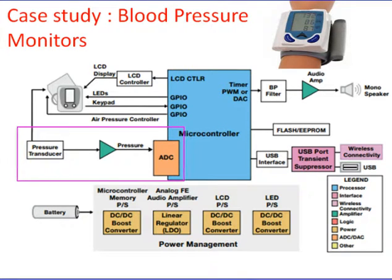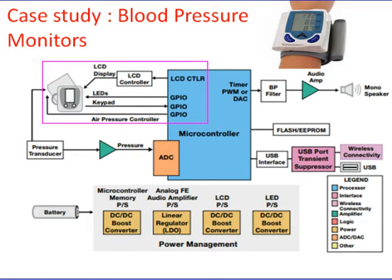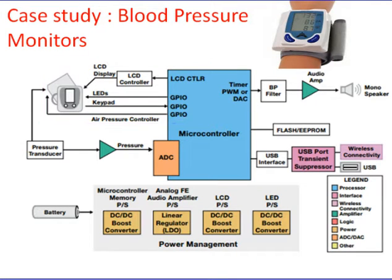The three measurement phases are inflation, measurement, and deflation. Also included in the blood pressure monitor are an LCD display, selection buttons, memory recall, power management, and a USB interface. The digital measurements of pressure and heart rate are performed by a microprocessor.